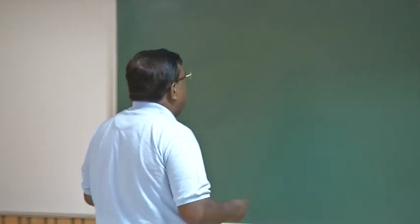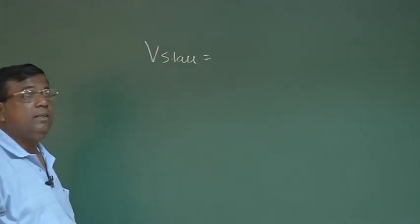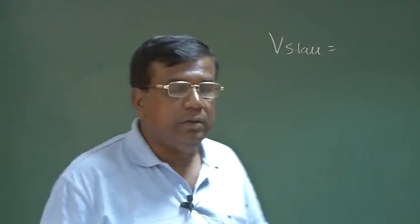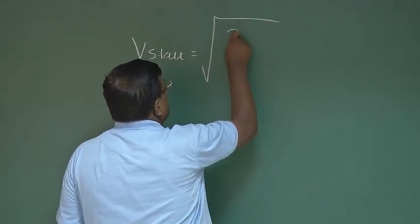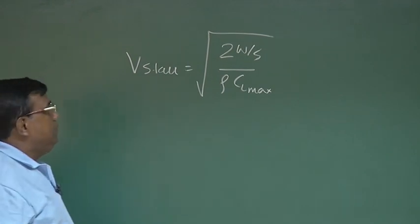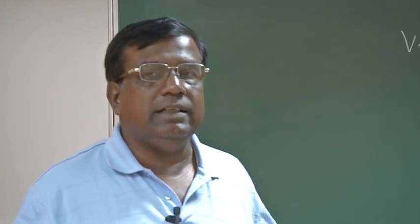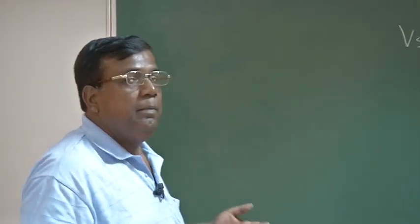Today we are discussing about takeoff. Before takeoff, we revisit V stall. For 1g, V stall for cruise is defined as the square root of 2W/sρCL_max. Please understand — when you talk about V stall, you should not think we are stalled. No. The correct interpretation of V stall is that this is the minimum speed with which you can fly an airplane. Any speed less than that, as far as air is concerned, is not to be considered, because that will not help in flying the machine. That is why V stall is called the minimum speed.